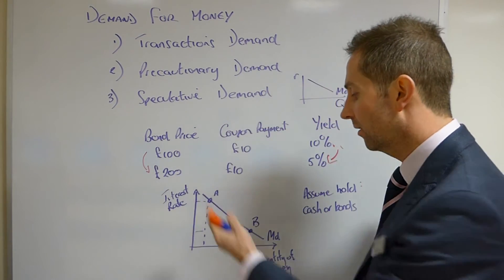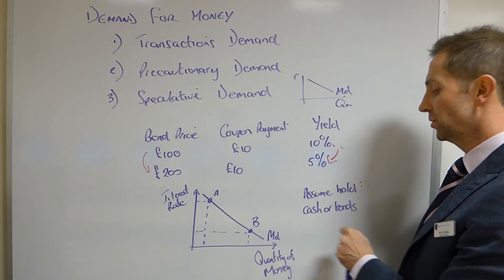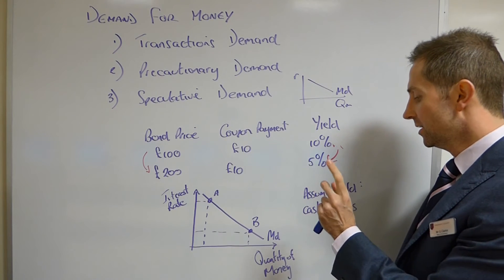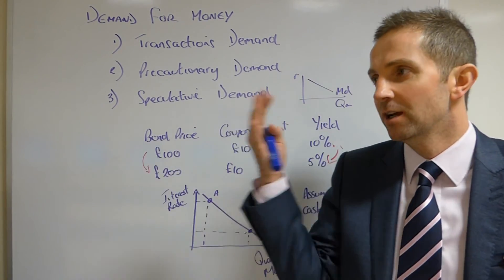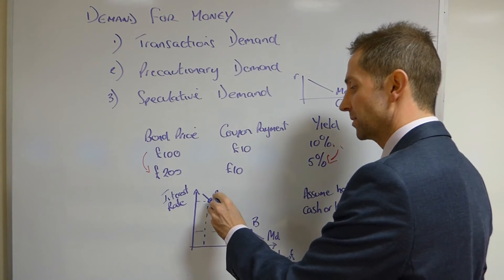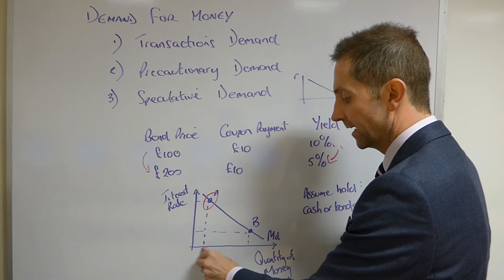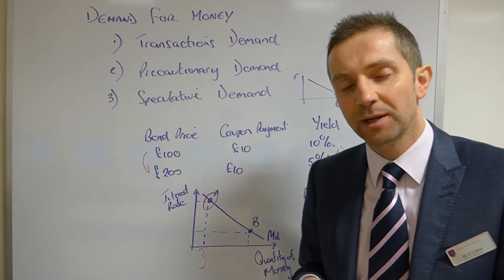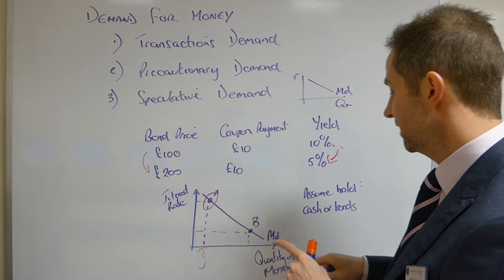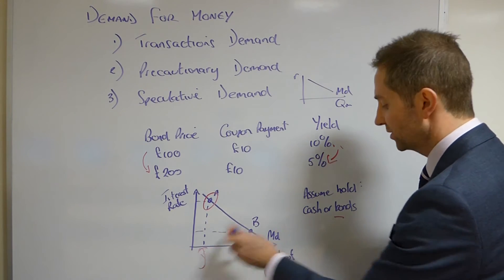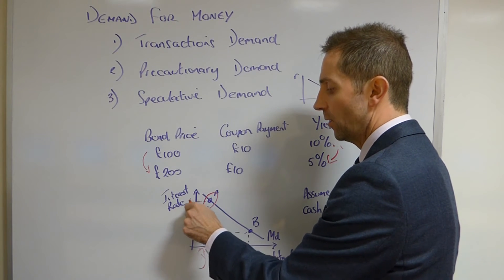So how do we apply this to our money demand curve? Why is it that it slopes downward from left to right? Well, we're assuming that individuals and economic agents are either holding cash or bonds — that's the option. If you're not holding cash, you're holding bonds, and vice versa. Take point A on the money demand curve. We can see we've got a very significant interest rate, but the quantity of money demanded is relatively low. So the amount of cash people are holding is low. Well, in this model, if they're not holding lots of cash, they must be holding lots of bonds.